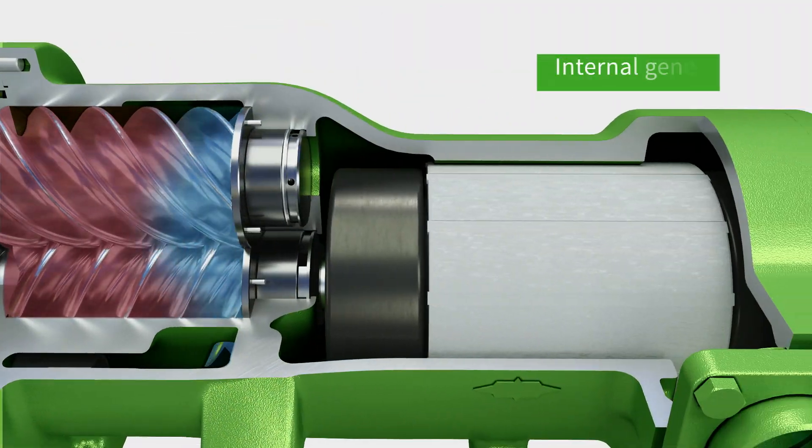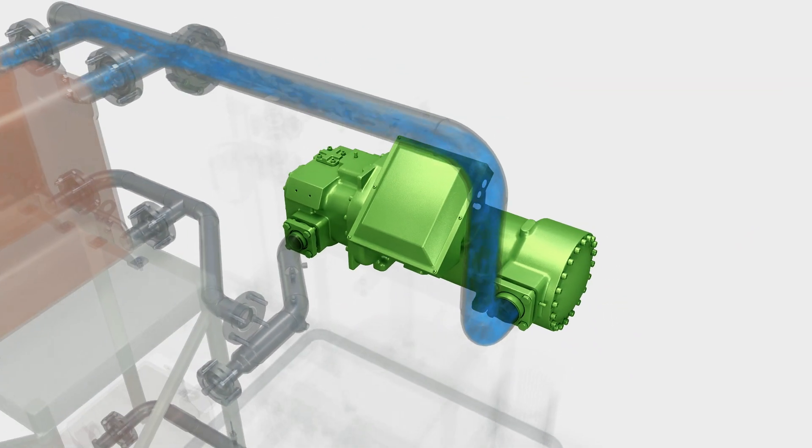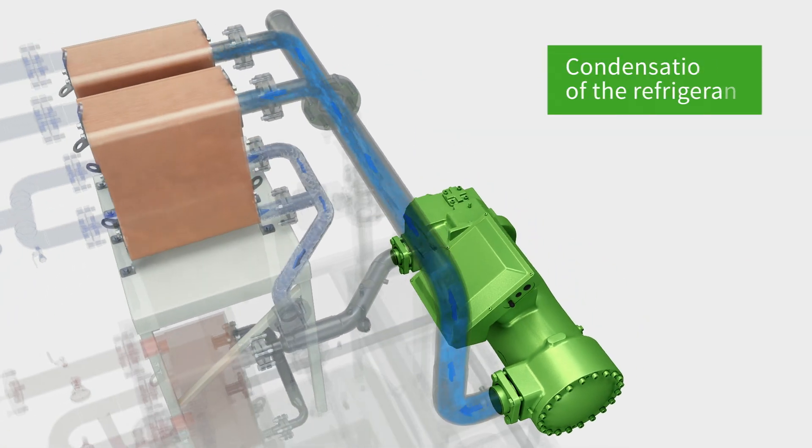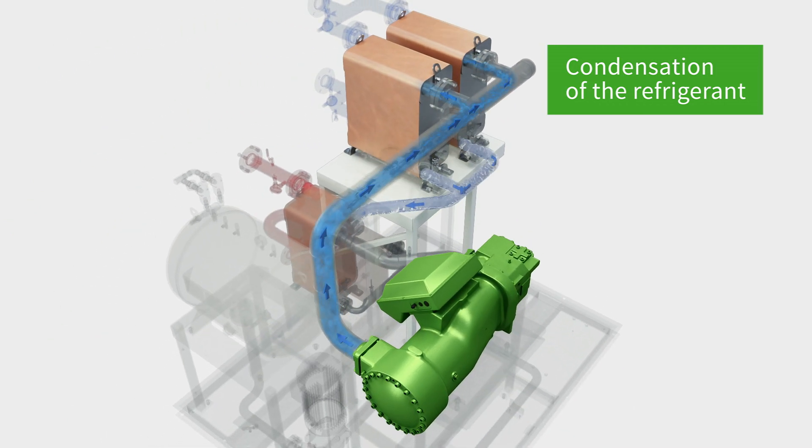The expander now drives the generator. Both are together in the same housing. The gaseous refrigerant is then condensed and added back into the cycle as a liquid by the pump.